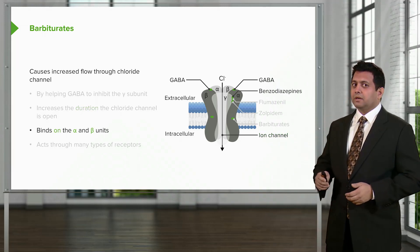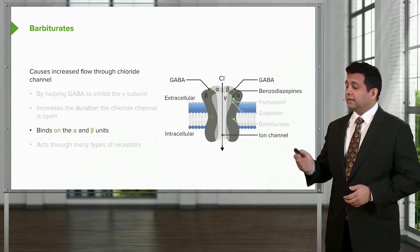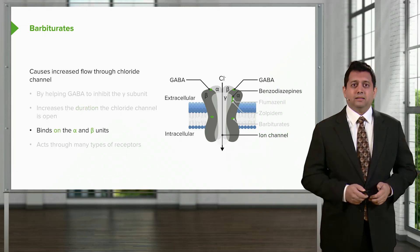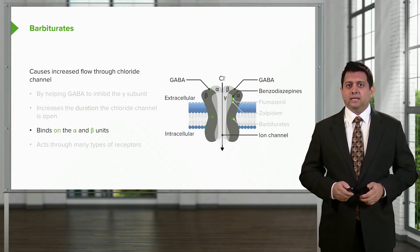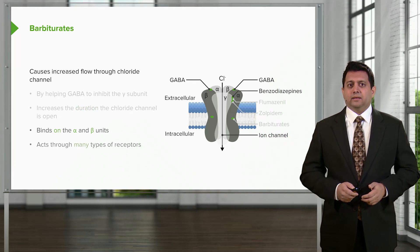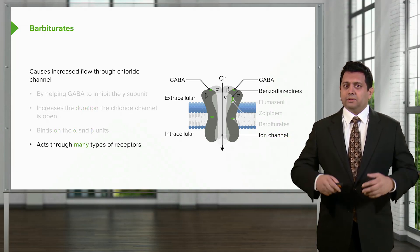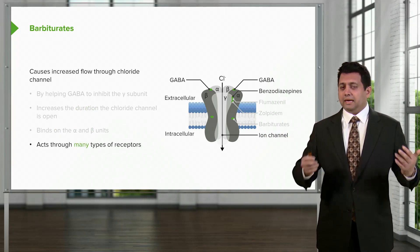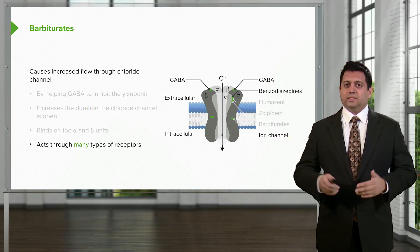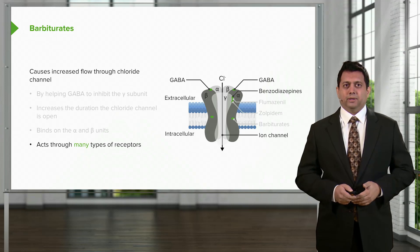Barbiturates are binding on both the alpha and the beta subunits, and through many types of receptors, they exert many levels of sedation throughout the brain.